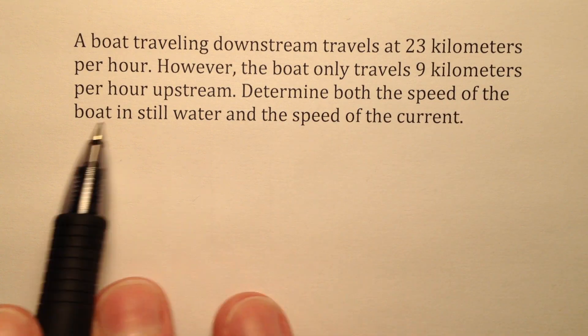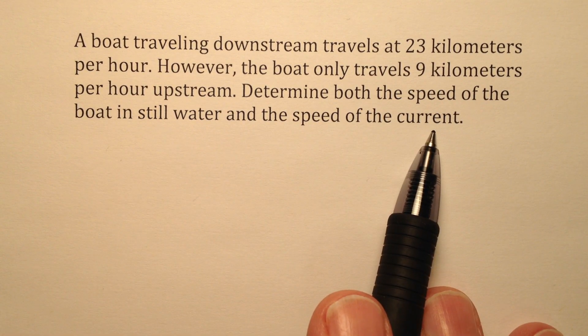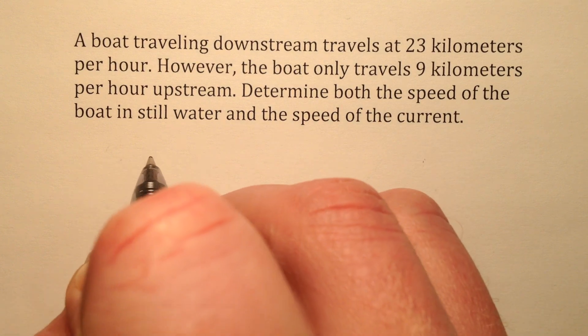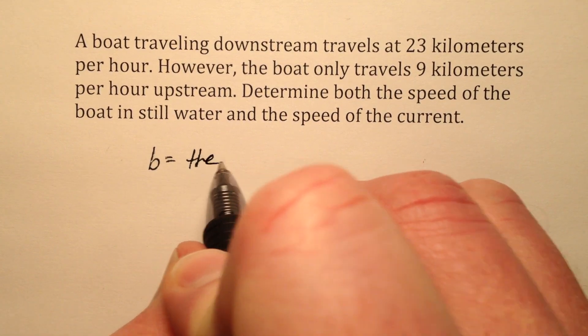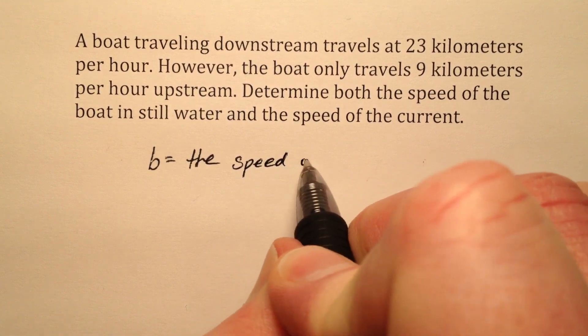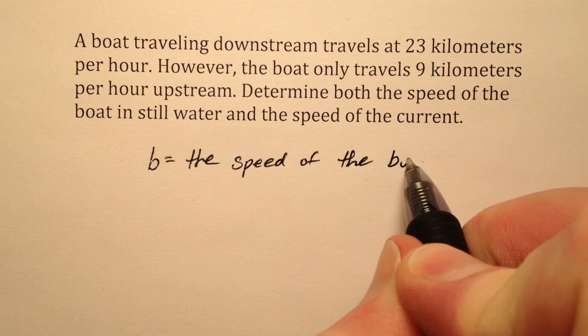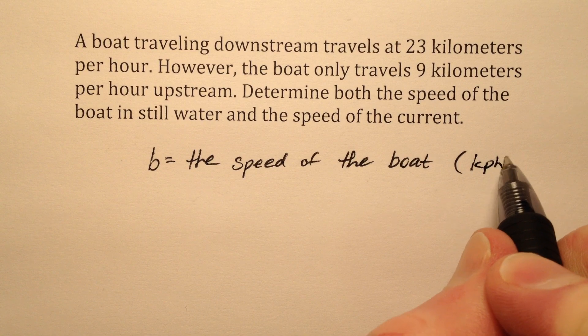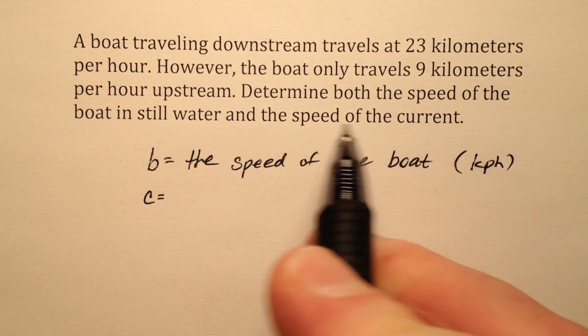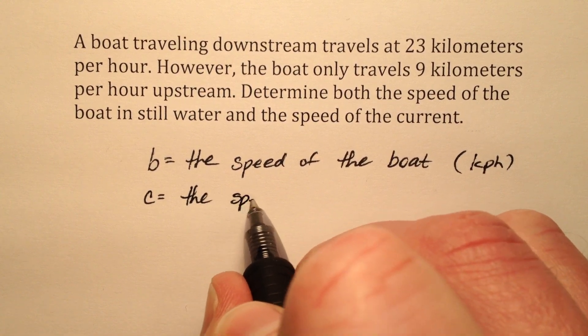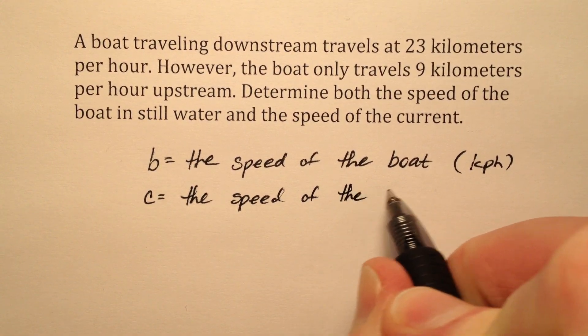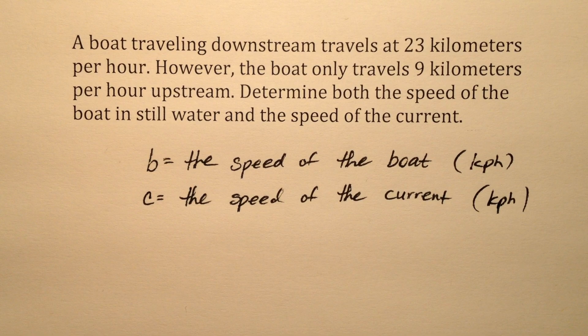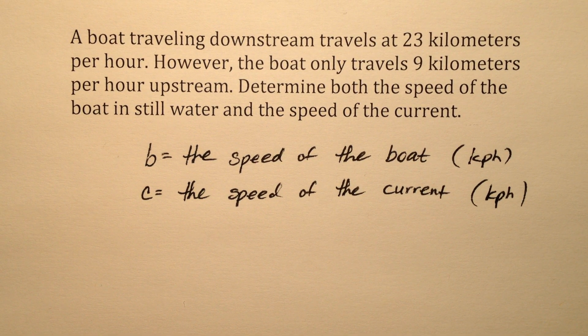We need to determine both the speed of the boat and the speed of the current, so our variable definitions will be based on the information we're trying to find. Let b be the speed of the boat, measured in kilometers per hour. And let c be the speed of the current, also measured in kilometers per hour.